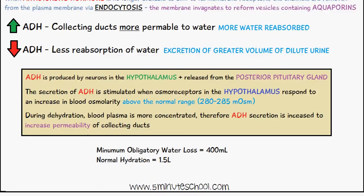ADH is produced by neurons in the hypothalamus and released from the posterior pituitary gland. The secretion of ADH is stimulated when osmoreceptors in the hypothalamus respond to an increase in blood osmolarity — when the blood becomes more concentrated and above the normal range of 280 to 285 milliosmoles.